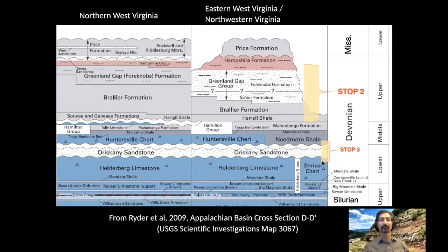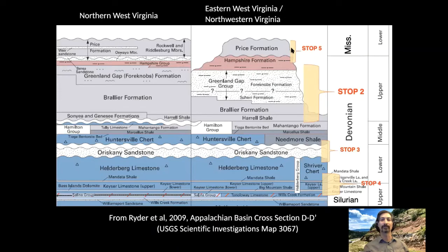At Stop 4, we'll move a little bit further down in section and we'll see the Tonoloway Limestone through the lower part of the Helderberg Group, as well as all the way up into near the contact with the Oriskany Sandstone. Then at Stop 5, we'll go higher up in the section where you'll see the transition from the Hampshire into the Price Formation and in particular a very interesting member called the Rockwell Member.